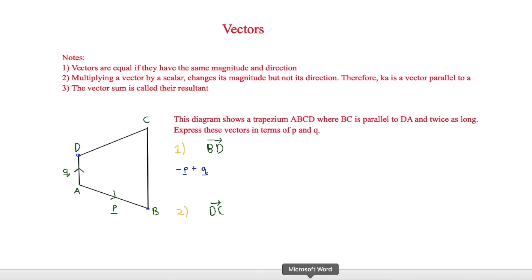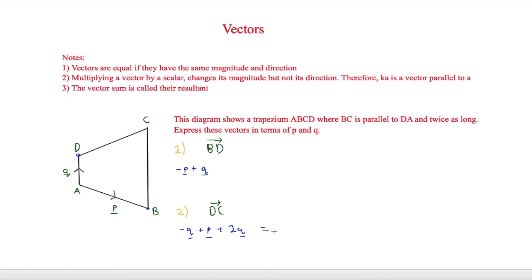The next vector is DC. To get from D to C, we go D to A, then A to B, then B to C. D to A equals minus q, because q is in the other direction. A to B equals plus p. And since BC is parallel to DA and twice as long, k equals 2, so BC equals 2q. Adding these together and simplifying gives p plus q, and that is our final answer.